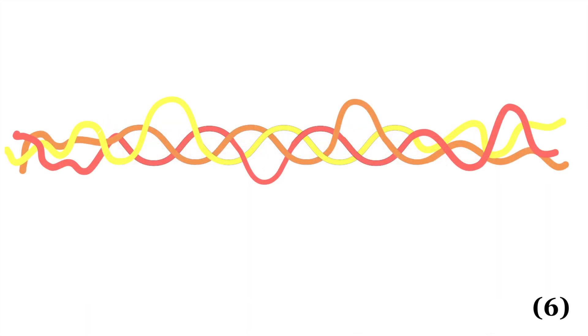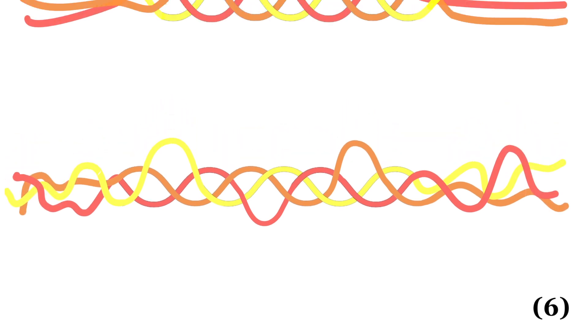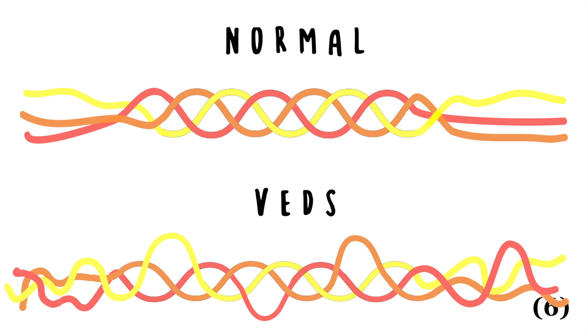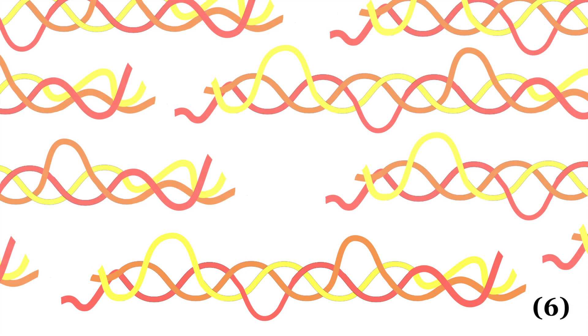The mutation then interferes with the proper cleaving of the N-terminus propeptides, which is the start of the amino acid chain, the amino group, and the C-terminus propeptide, which is the end of the chain, the carboxyl group. These fancy names simply mean the two opposite ends of the procollagen. So, to simplify, because of the mutation, the ends of the procollagen are not cut off properly, leaving the fibril structure with uneven spaces between each defective procollagen.